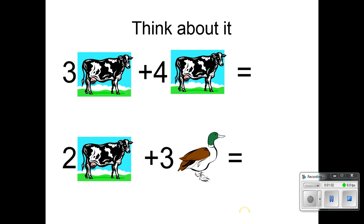Alright so let's think about this. What's 3 cows plus 4 cows? Yeah that'd be 7 cows and 2 cows and 3 ducks is 2 cows and 3 ducks.